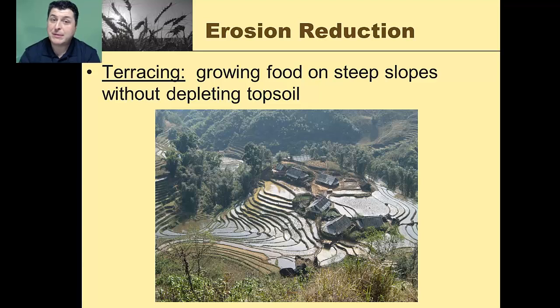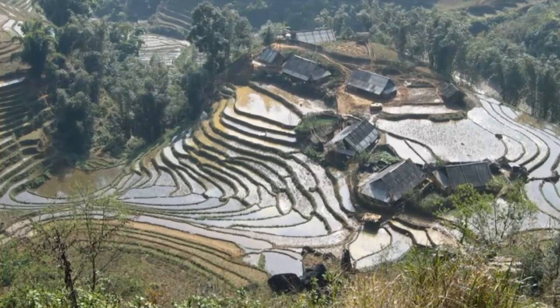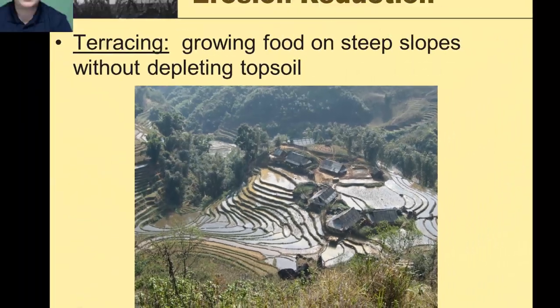On highly sloped land where we still want to grow crops but prevent erosion, one option is terracing — actually growing food on steep slopes without depleting your topsoil. By digging in small steps, it reduces the flow of water over the land and helps maintain the soil even while growing on a highly erodible slope.